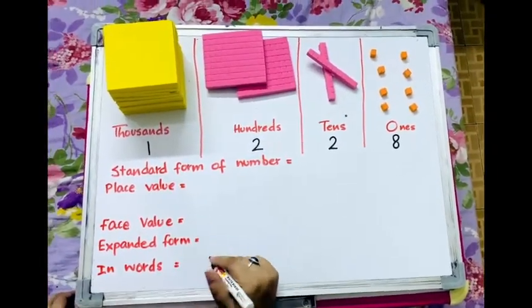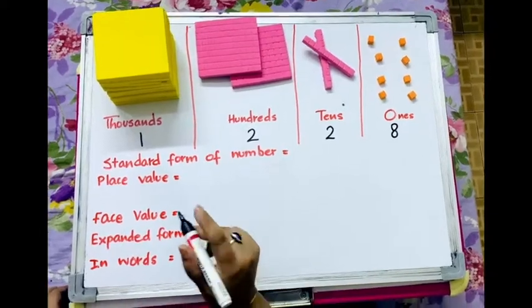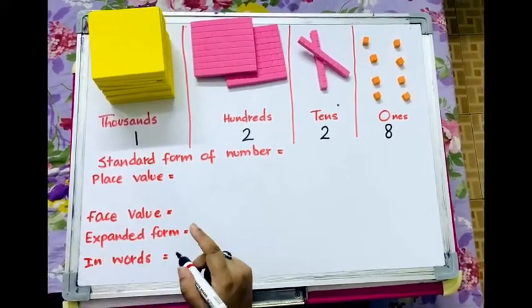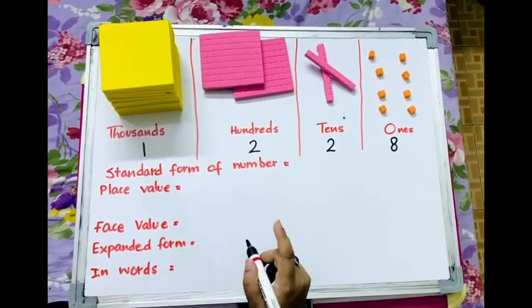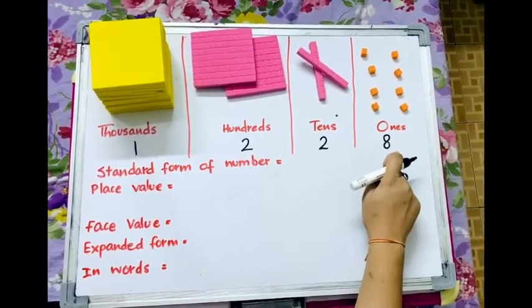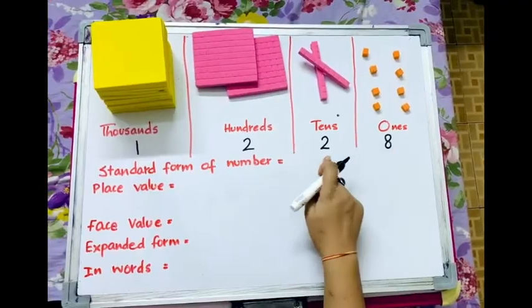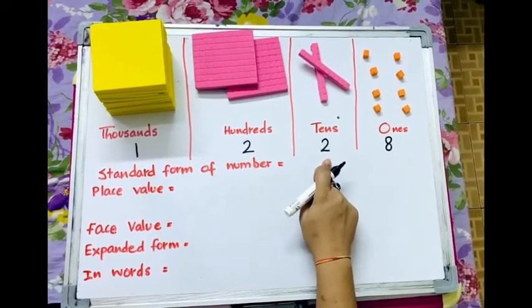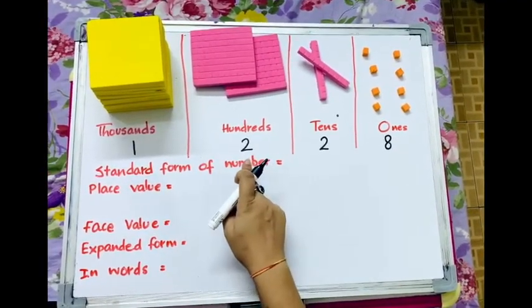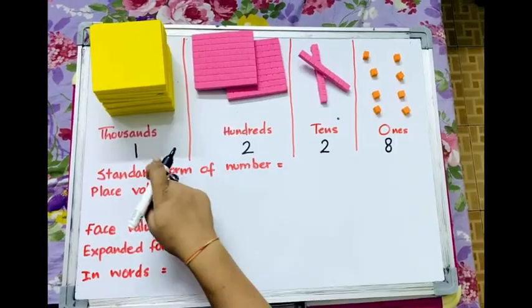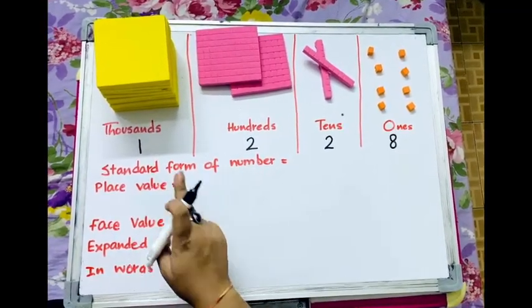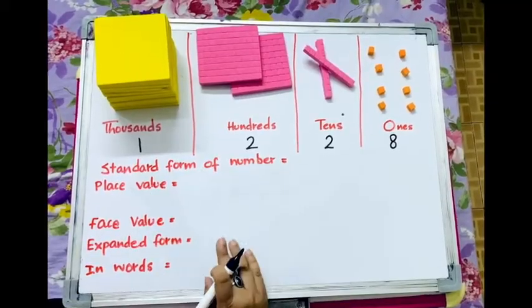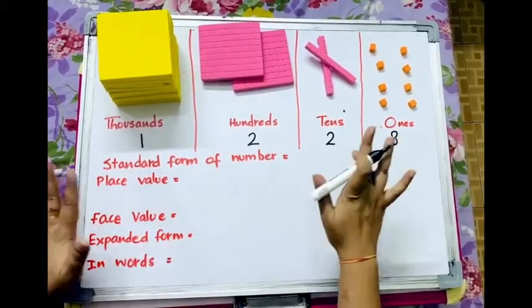I am sure you have got my point. I will write all the digits in my place value chart now. If I see carefully, digit 8 is in my ones place. Digit 2 is in my tens place. Digit 2 is in my hundreds place. And digit 1 is in my thousands place. So, this will be its value, its place here.